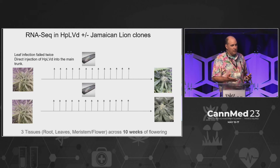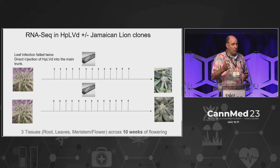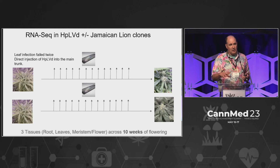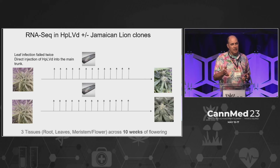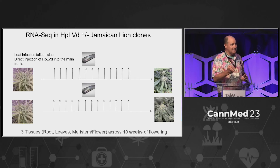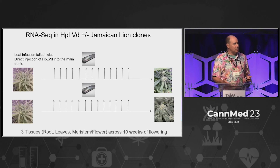We took a Jamaican lion clone — the mother plant we sequenced many years ago and put the reference public — and tried to infect one. We tried using Q-tips to swab viroid on cut leaves three times with two weeks between each attempt, and it would not infect. We finally broke a branch off the bottom of a plant and used a P-1000 to inject the viroid right into the stem. Two weeks later, we were positive in the roots but nowhere else, which was an oddity we weren't expecting.